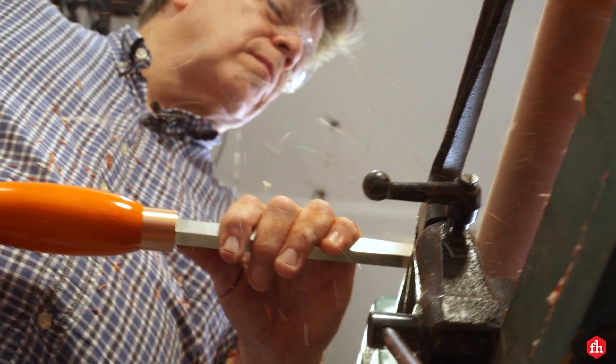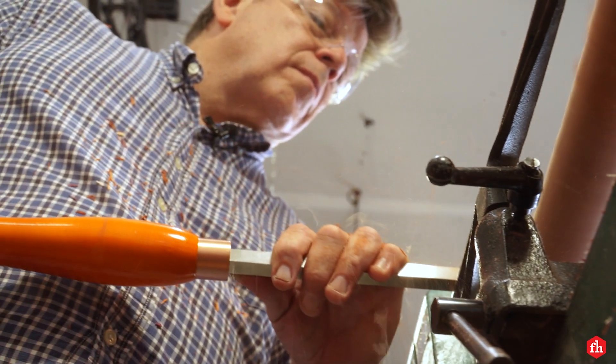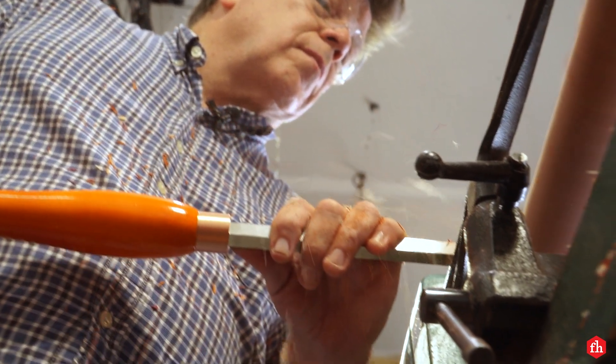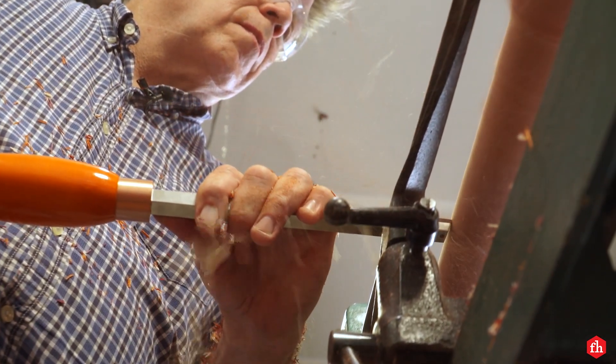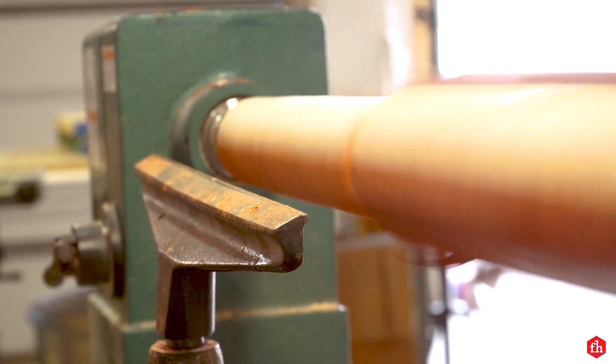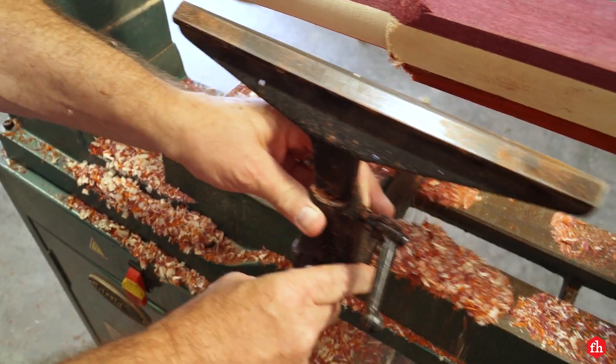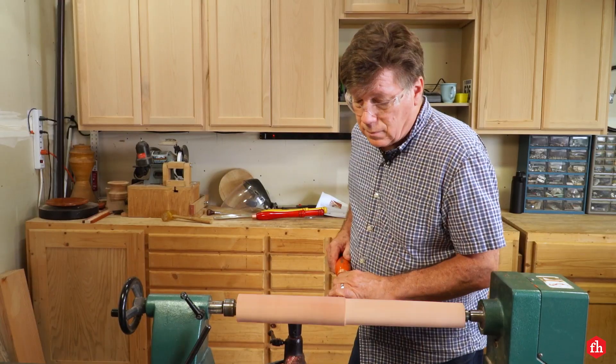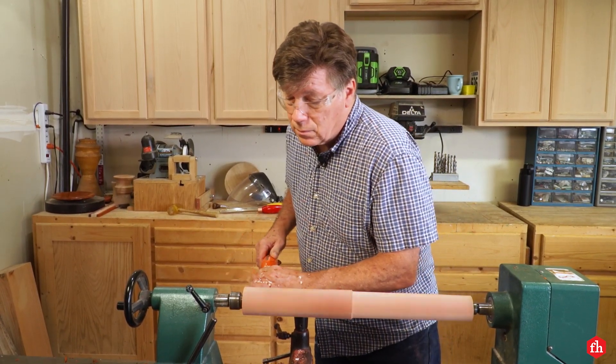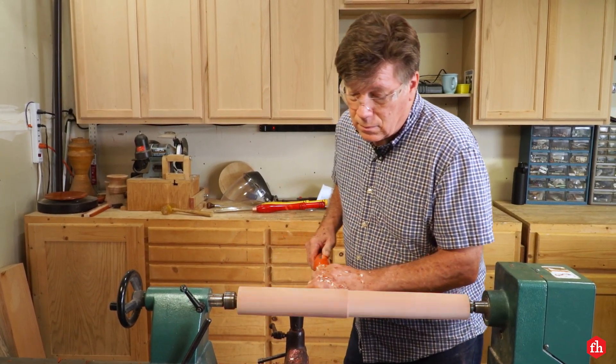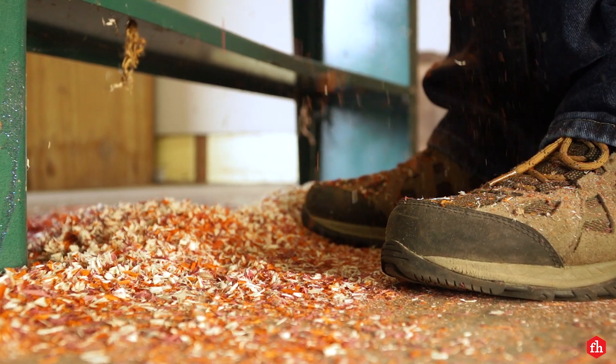Once you get it to the thickness you want, be sure to turn your lathe off before moving to the other half and continue rough turning. This first project is going to be a French rolling pin that's tapered on both ends with no handles, but I first need to turn it into a cylinder first.